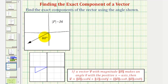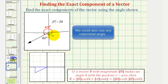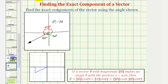Notice how for this vector, theta will not be 60 degrees. The most obvious positive angle that we would use for theta would be this angle here — that would be 180 plus 30, or 210 degrees. Or the most obvious negative angle would be negative 90 minus 60, which is negative 150 degrees. Regardless of which angle we use, the reference angle would be 30 degrees — the angle between the x-axis and this vector.